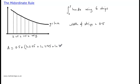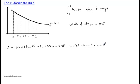Using the formula, the area is approximately equal to 0.5 — that's the length of the strip — times by ln(2.25) plus ln(2.75) plus ln(3.25), and so on. This gives a value of the area as 3.66.